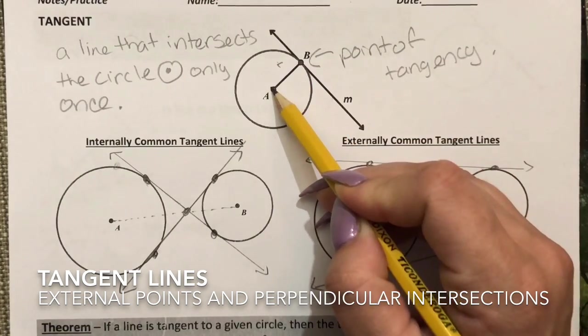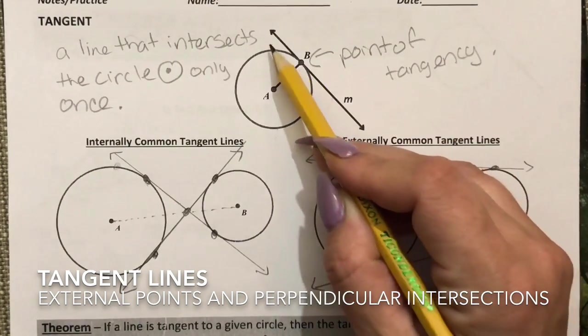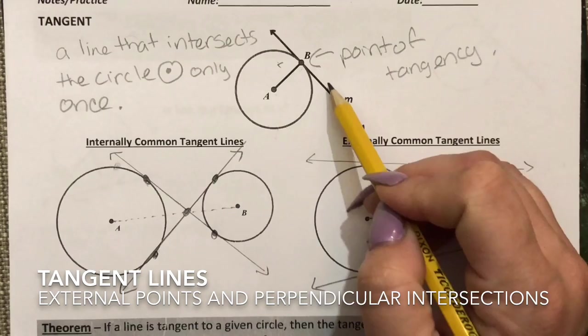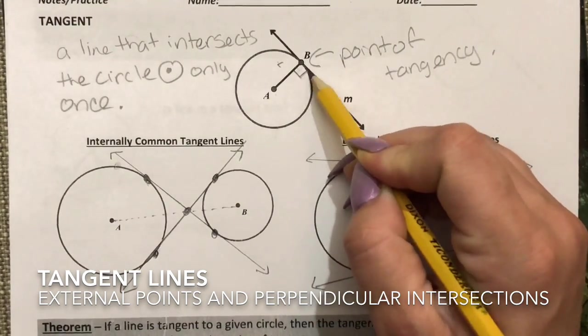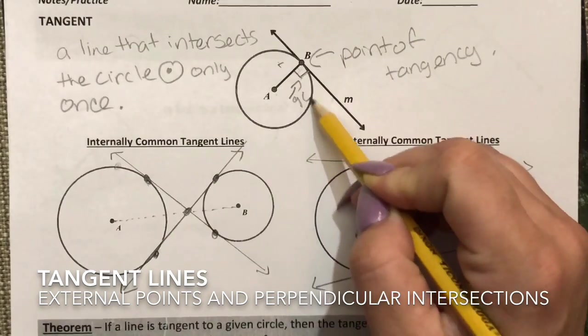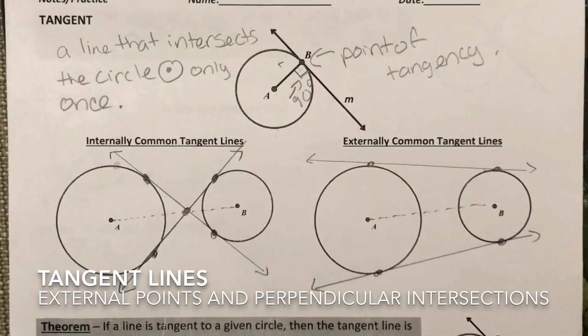It goes from the center to the edge of the circle and then I also have this tangent line. One property that I know is that it creates a perpendicular intersection which means that that angle is 90 degrees.